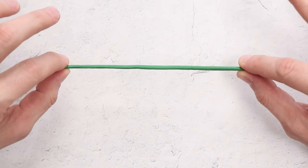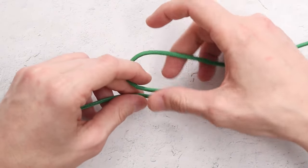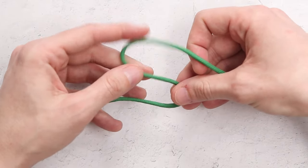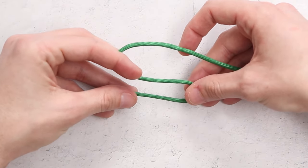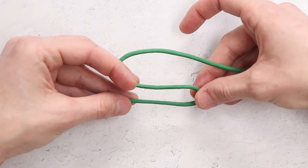For our first step, we're going to take our paracord and we are going to fold it into an S shape. So a loop to the right, a loop to the left on top, to make it look like that.